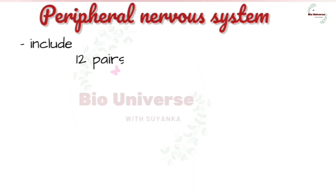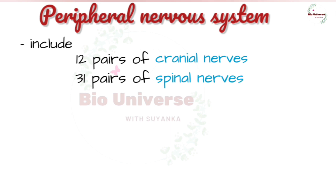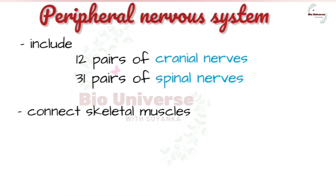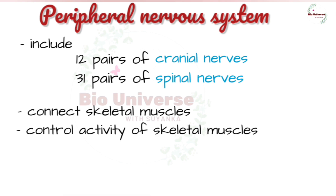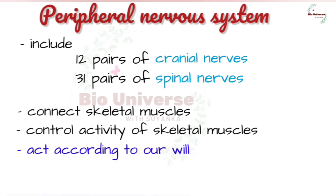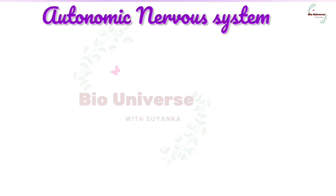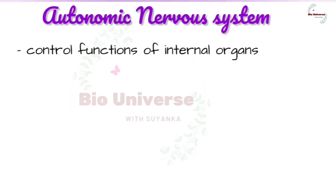The peripheral nervous system includes 12 pairs of cranial nerves arising from the brain and 31 pairs of spinal nerves arising from the spinal cord. These nerves connect the skeletal muscles and control their activity according to the directions and demands of the body. These nerves are related to voluntary acts, meaning they act according to your will.